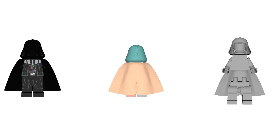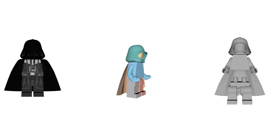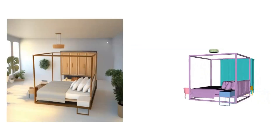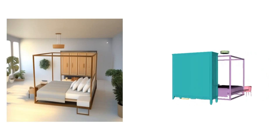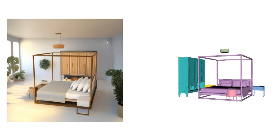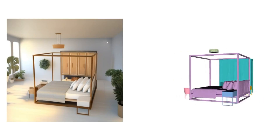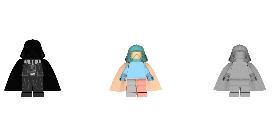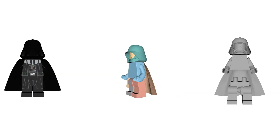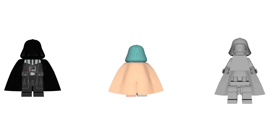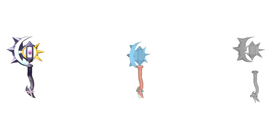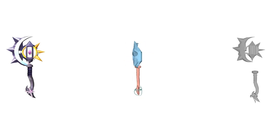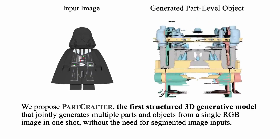It's built on a pre-trained 3D mesh diffusion transformer and introduces two major innovations. First, a compositional latent space where each part is disentangled and represented independently. Second, a local-global denoising transformer that fuses features within parts and across the entire object. It even generates parts that aren't visible in the image, using learned priors.